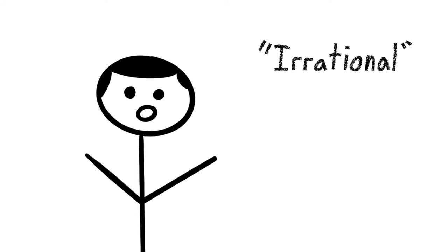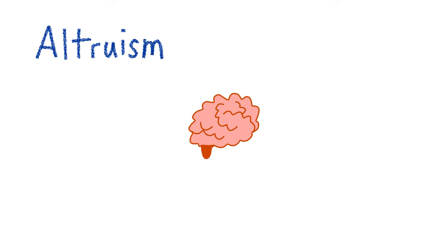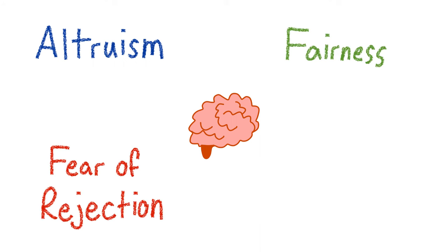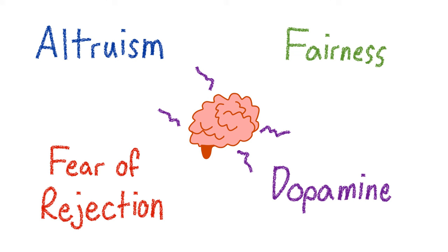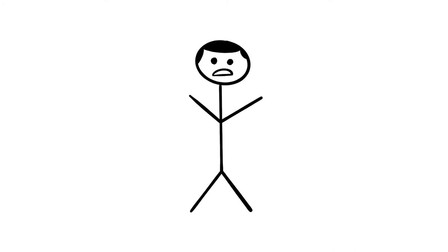But are they irrational when you consider all aspects of human behavior? Many researchers believe that there could be elements of altruism, fairness, fear of rejection, and many other human behaviors at play here. It has even been hypothesized that a dopamine hit from the responder rejecting a bad offer as revenge could more than compensate for the money they lost. Humans are complicated, and generalizing them is hard to do.